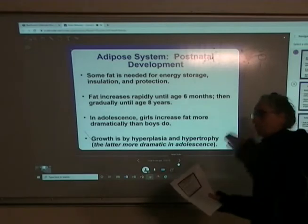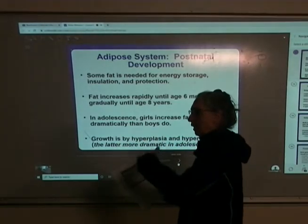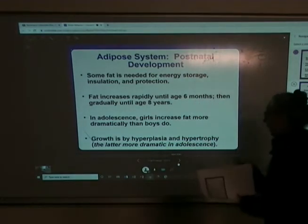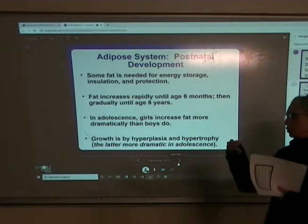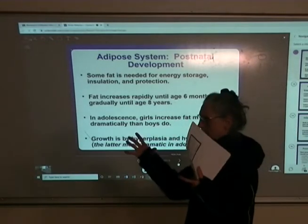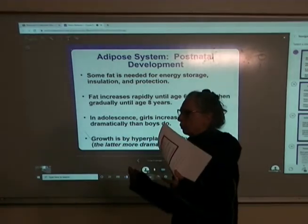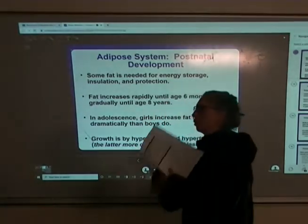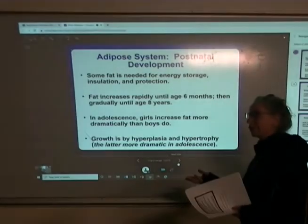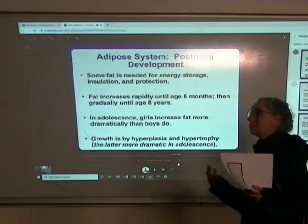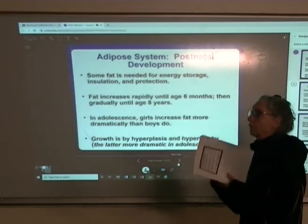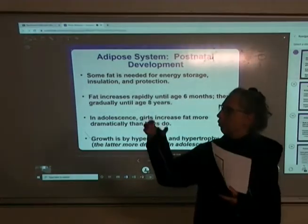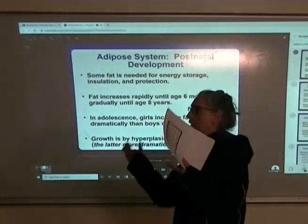Once we're born, adipose cells grow rapidly for the first six months, with some new cells laid down until around age eight. When we go into puberty, estrogen stimulates an increase in the size of fat cells, while testosterone does not. So post-puberty we see boys put on more muscle mass and girls put on more fat mass. If girls are active during puberty, they won't put on as much fat mass. Up until puberty is finished, growth of adipose cells involves both hyperplasia — adding more cells — and hypertrophy — the cells getting bigger and filling with fat.